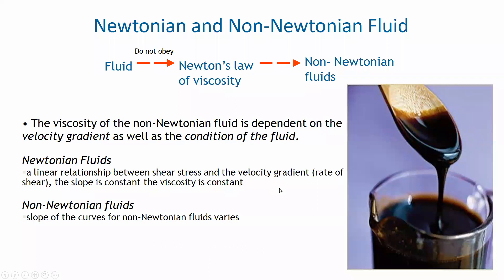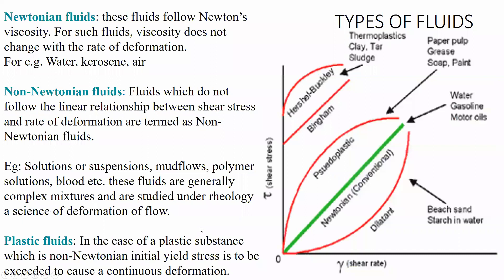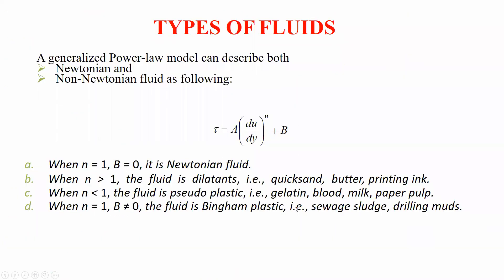For non-Newtonian fluids, viscosity depends on the velocity gradient and the relationship is not linear. On a shear stress vs. velocity gradient plot: Newtonian fluids follow the green linear curve; pseudo-plastic fluids curve differently; dilatant fluids curve the other way; Bingham plastics have a yield stress. Examples of non-Newtonian fluids include mud flow, polymer solutions, and suspensions.